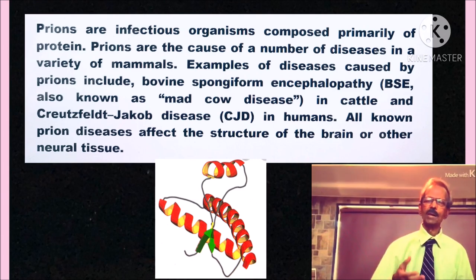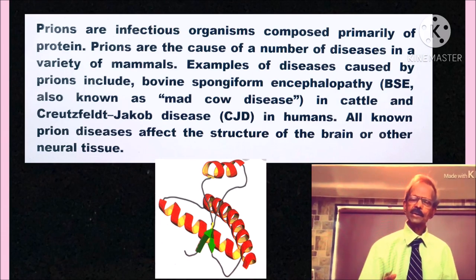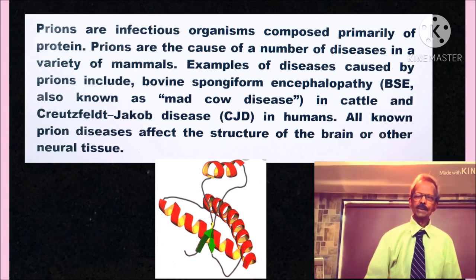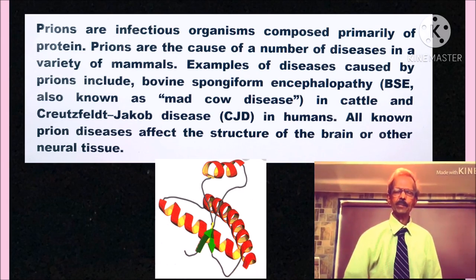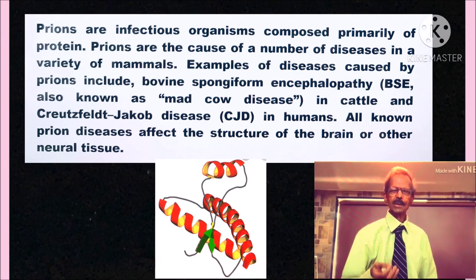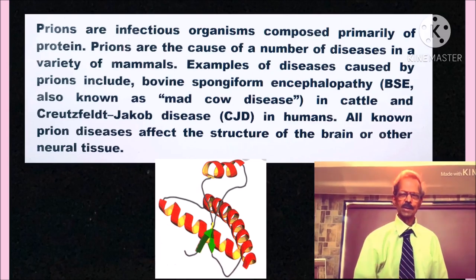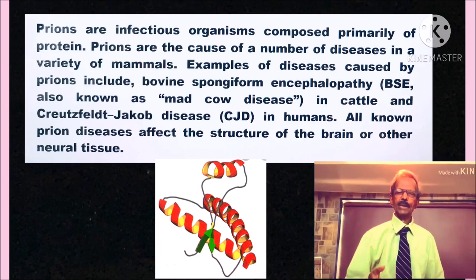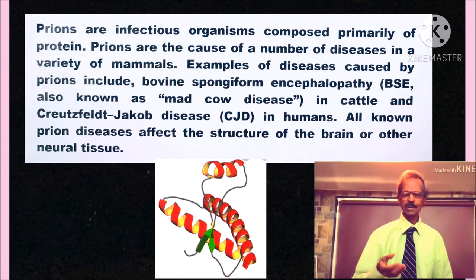Prions are also included in the group of microorganisms. Prions are infectious organisms composed primarily of proteins. Prions cause a number of diseases in a variety of mammals. Examples of diseases caused by prions include bovine spongiform encephalopathy, BSE, also known as mad-cow disease in cattle, and Creutzfeldt-Jakob disease, CJD disease in humans. All known prion diseases affect the structure of the brain.